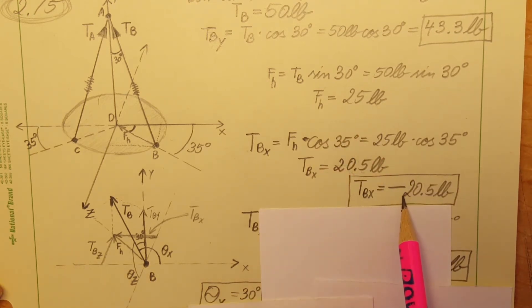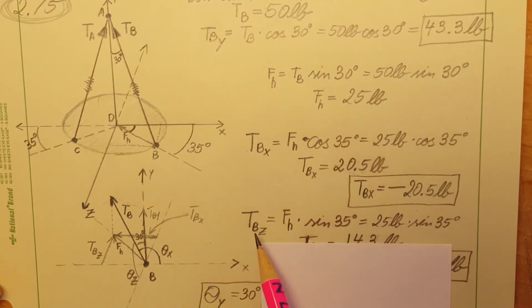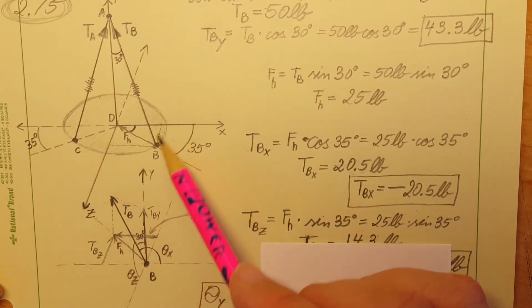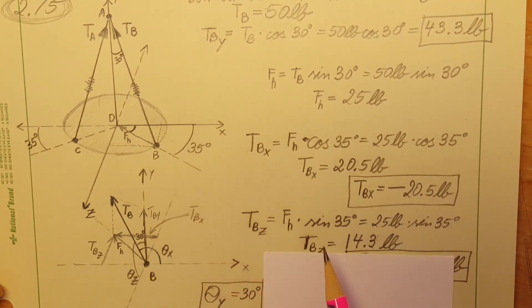Now let's take a look at our z component. Again we can use the 35 degree but we're going to use sine. Plug in using FH and we're going to have 14.3 pounds. Positive z is downward and negative z is upward, and as we can tell our z component is going towards the negative z, therefore our z component will be negative 14.3 pounds.